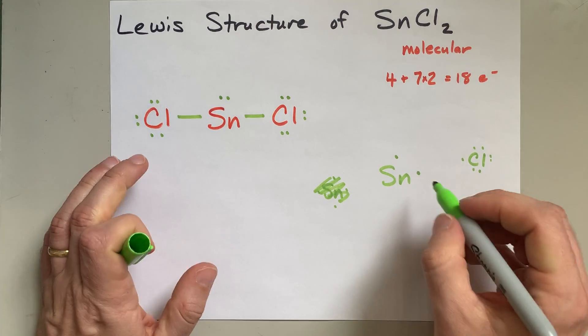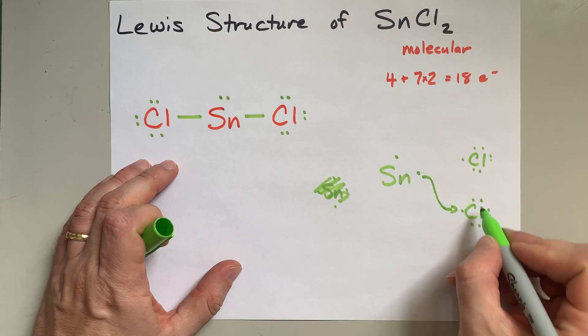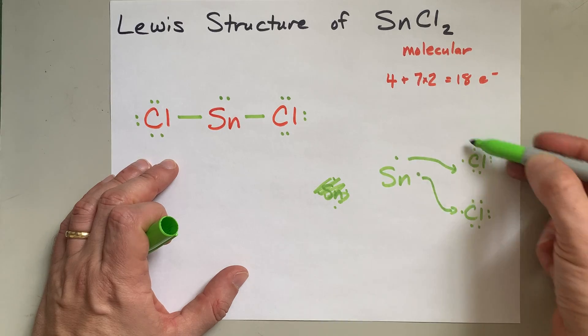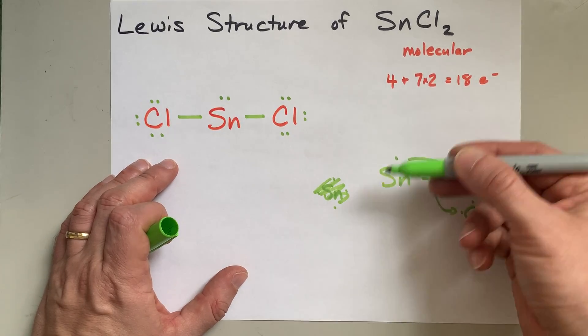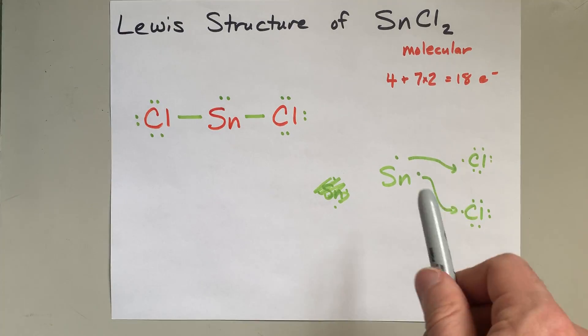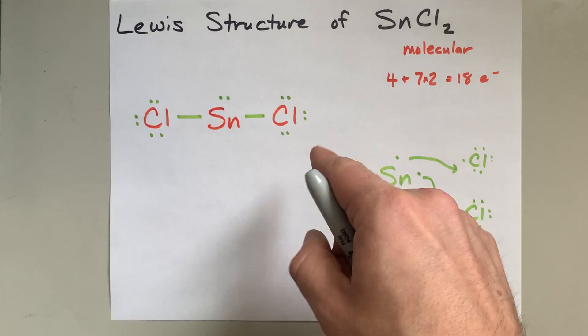And then you have to show the transfer of electrons from the metal to the non-metal. I cannot stress enough, this is not the real structure for tin, two chloride, once you actually look into it. So if your teacher's demanding that, you should set them straight.